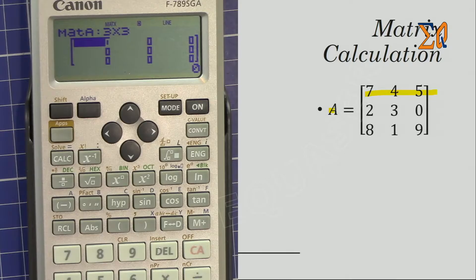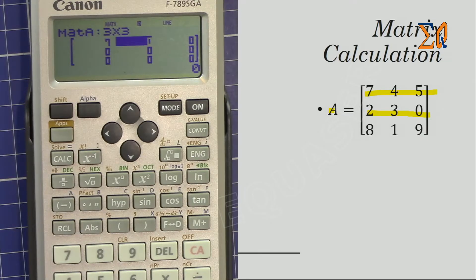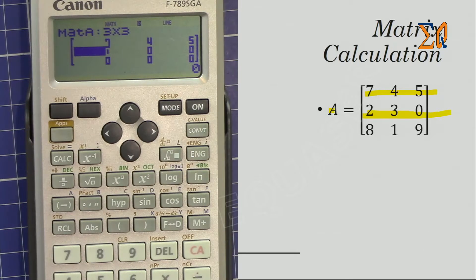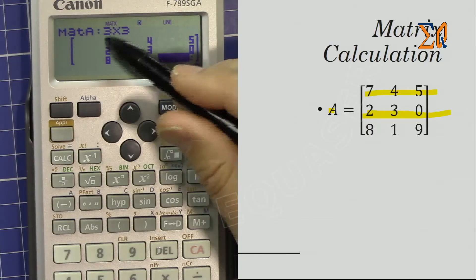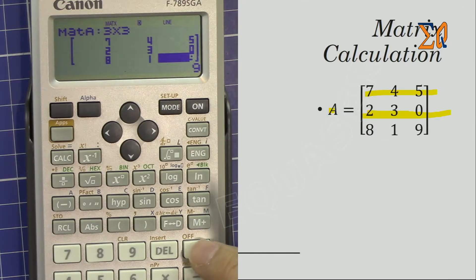The empty matrix grid appears on screen. I enter values by row from left to right, pressing the equal sign after each value to move the cursor to the next cell. First row: seven, four, five. Second row: two, three, zero. I continue pressing equal after each entry.